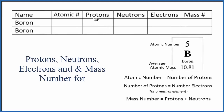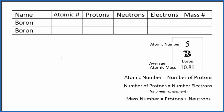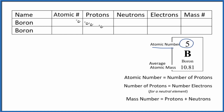In this video we'll talk about the number of protons, neutrons, electrons, and the mass number for boron. Looking at the periodic table, we see that boron has an atomic number of five. The atomic number is the number of protons, so boron has five protons. This is true regardless of which isotope of boron we're dealing with — boron will always have five for its atomic number and five protons.